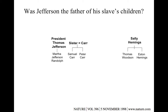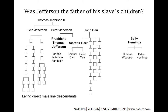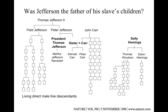To establish whether Thomas Jefferson was the father of Thomas Woodson and Eston Hemings, researchers needed to find living direct male-line descendants of Thomas Jefferson, Thomas Woodson, and Eston Hemings. Since Jefferson had no direct male-line descendants, they traced back to his grandfather, who would have passed the Y chromosome down through the president's father. They identified five living direct male-line descendants in the Jefferson line, three in the Carr line, five from the Woodson line, and one from the Hemings line.